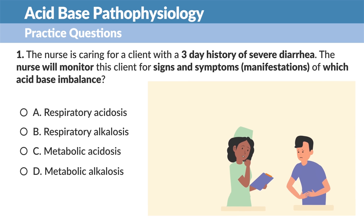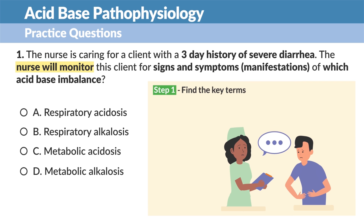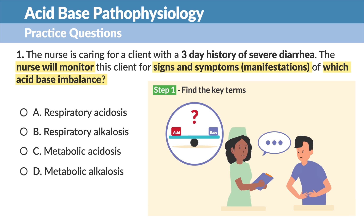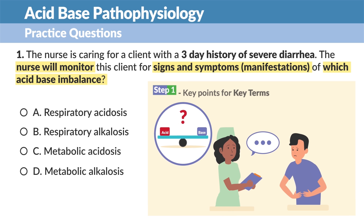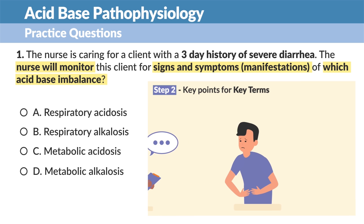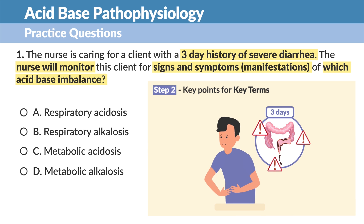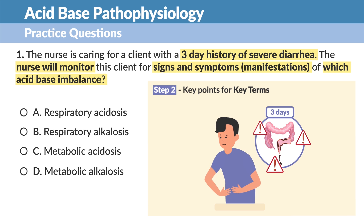Okay, this question is asking the nurse will monitor for which signs and symptoms, or manifestations, of which acid-base imbalance. The key problem here is a three-day history of severe diarrhea — maybe not explosive, but you get the point.